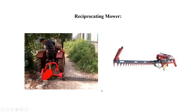This is a reciprocating mower. It is an offset tractor-operated reciprocating type of mower, used to cut grasses or herbage crops.